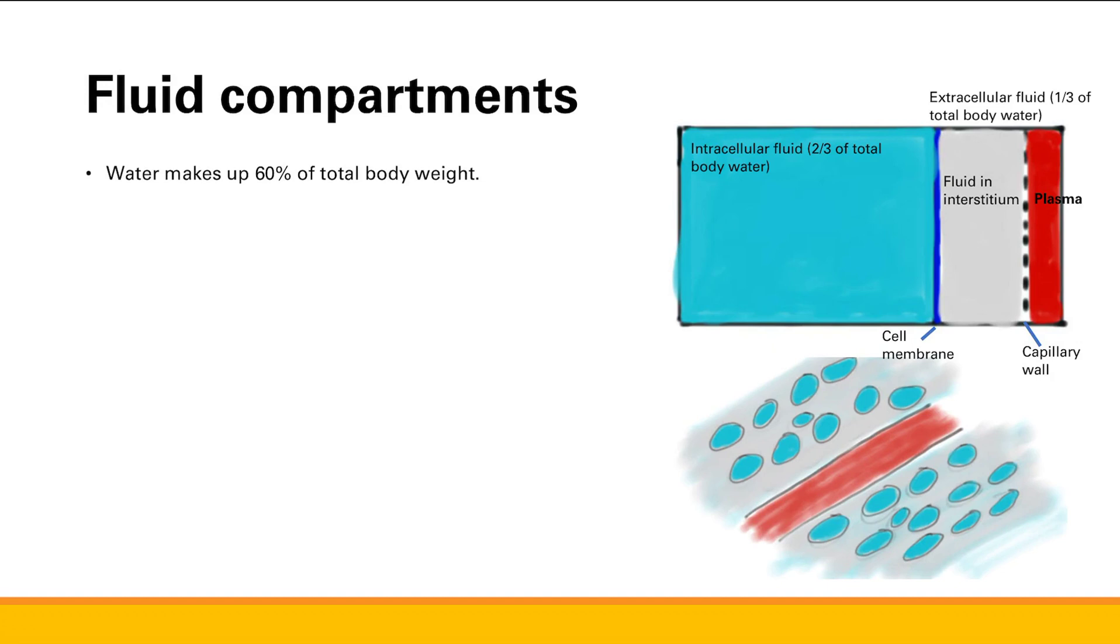All that water is divided up into different body compartments. A lot of it is inside the cell, intracellular. Two-thirds of total body water is intracellular in our cells. That's intracellular fluid. The rest of the fluid we call extracellular fluid. That could be in the interstitium, in between cells, or it could be in the plasma. That makes up one-third of total body water.